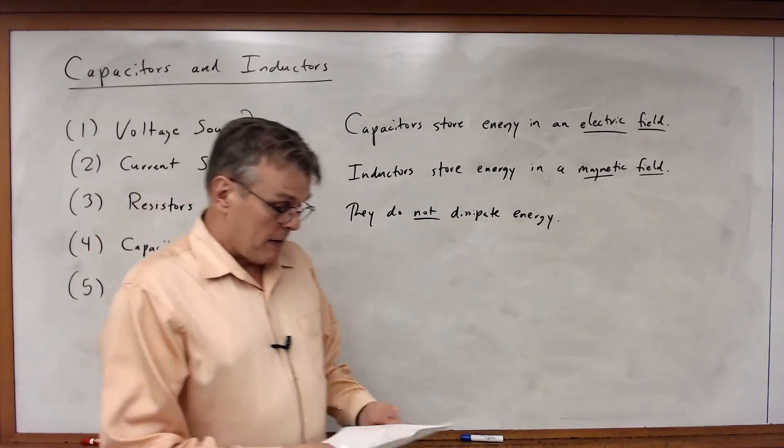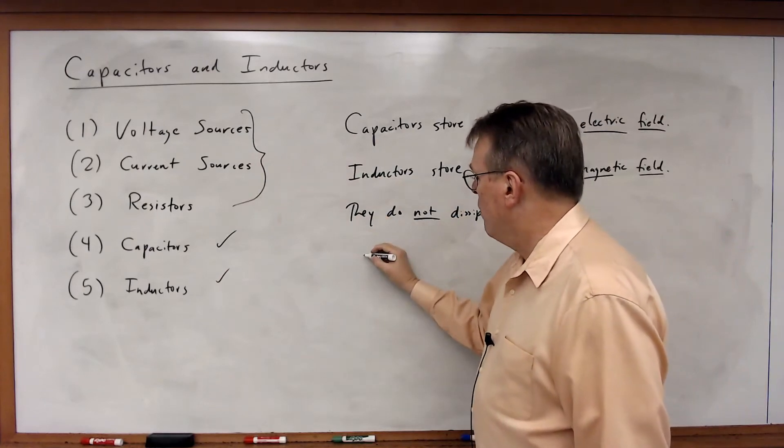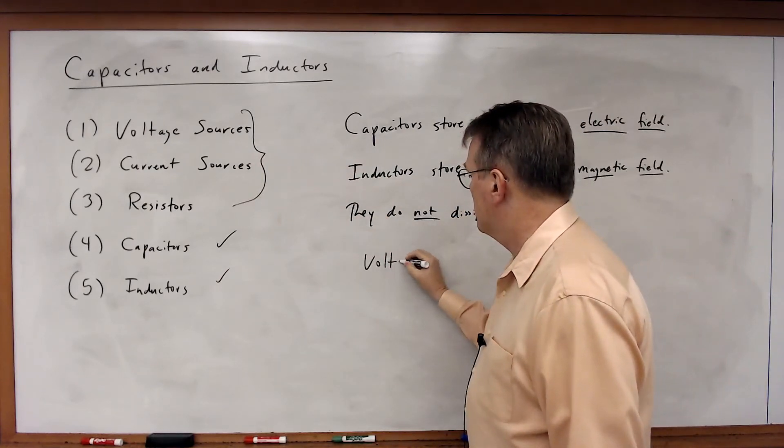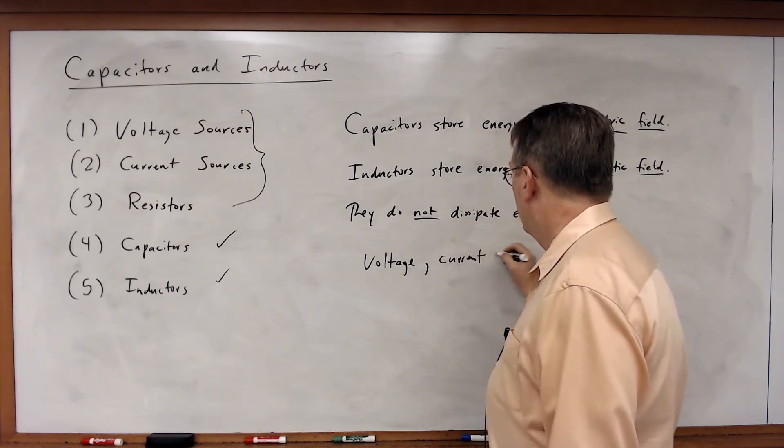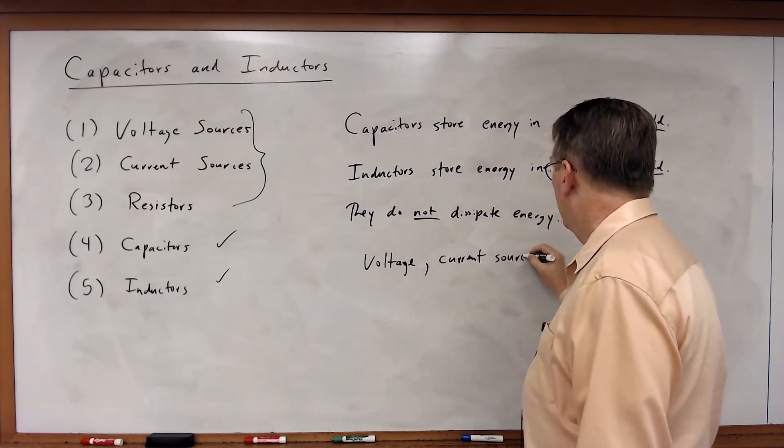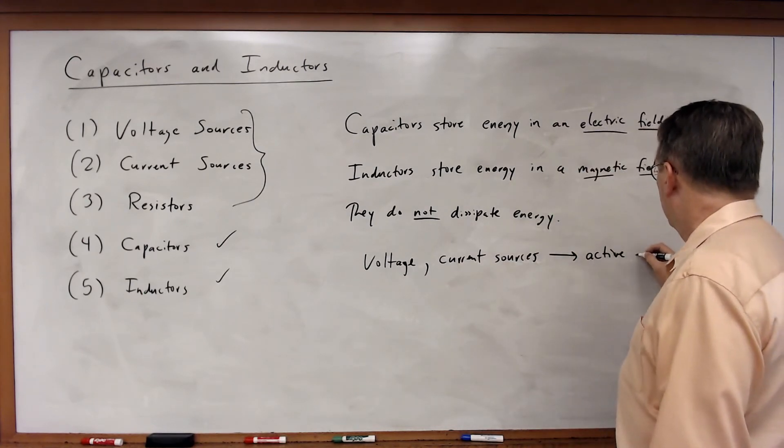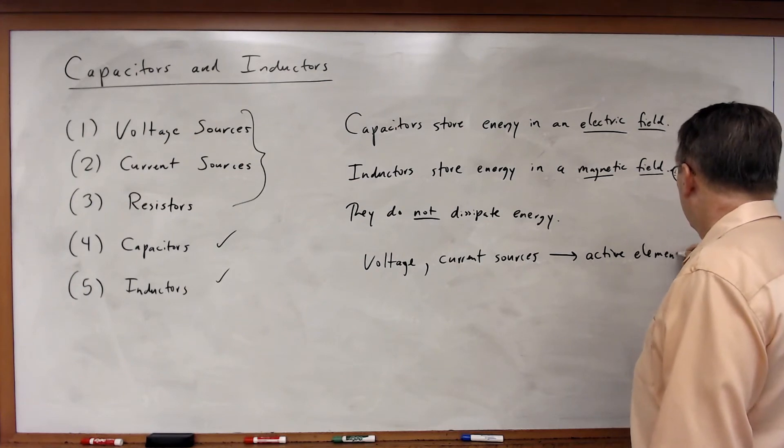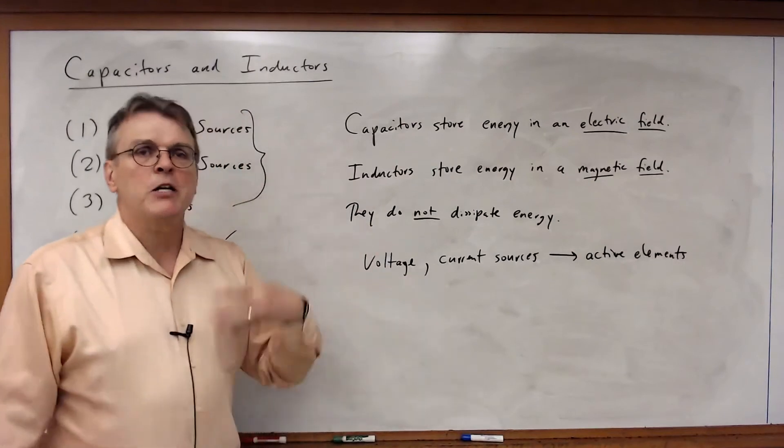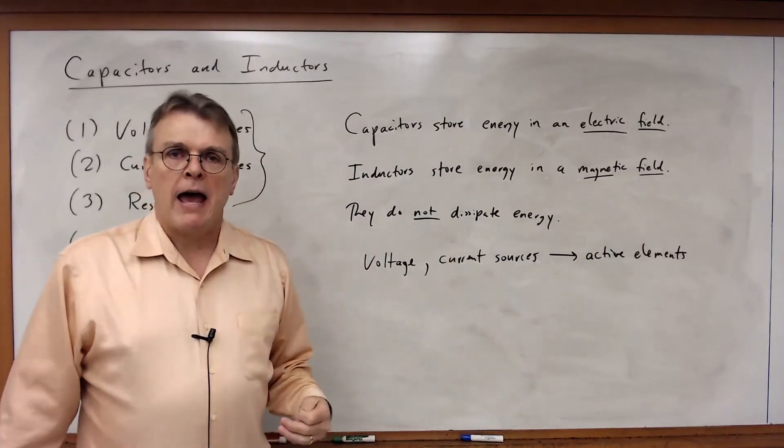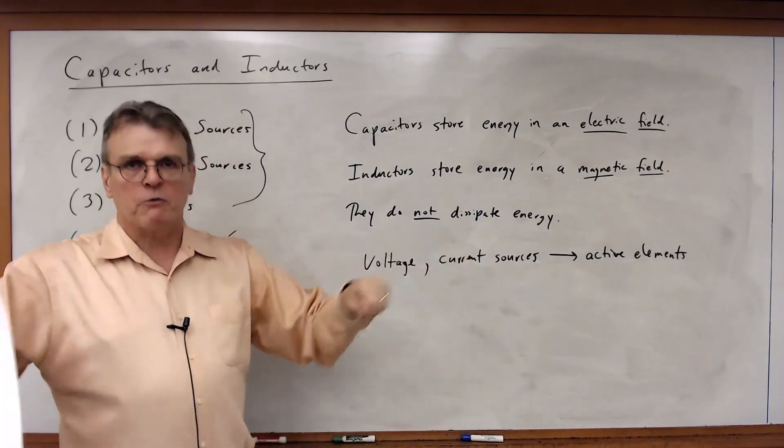One last thing I want to mention is that sources, as we've said before, voltage and current sources, we consider these to be active elements. In other words, as active elements a source can continuously have negative power. It can continuously generate energy and feed that to the rest of the circuit.